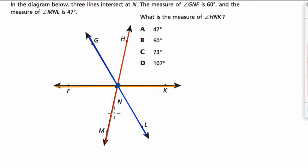The measure of G and F, where is that? G to N to F, that's this angle, is 60 degrees. Okay, I'm going to write that in there.